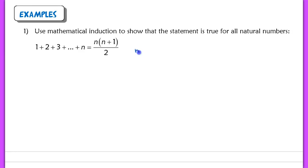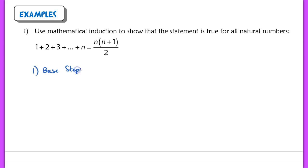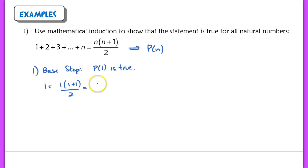If n equals 5, we read the statement as 1 + 2 + 3 + 4 + 5 = 5 times (5+1) divided by 2. We want to show this is true for any natural number. We begin with the base step: show that P of 1 is true. When n = 1, we have 1 = 1 times (1+1) over 2, which is 1 times 2 over 2 = 1. This checks out, so we're done with our base step.